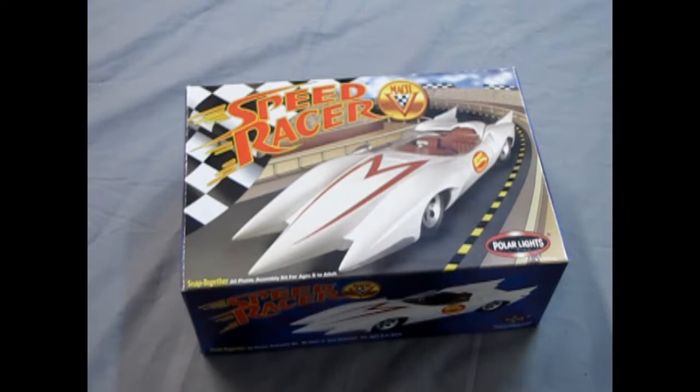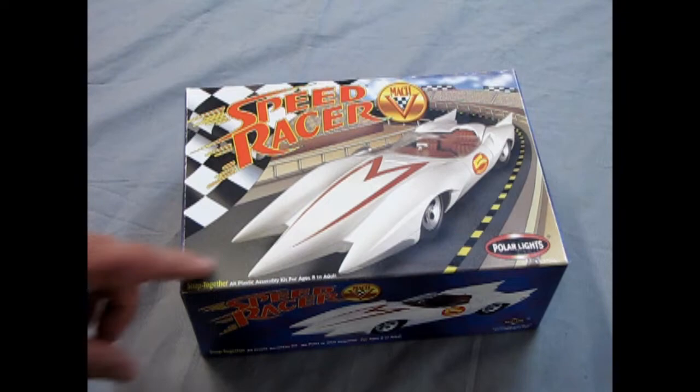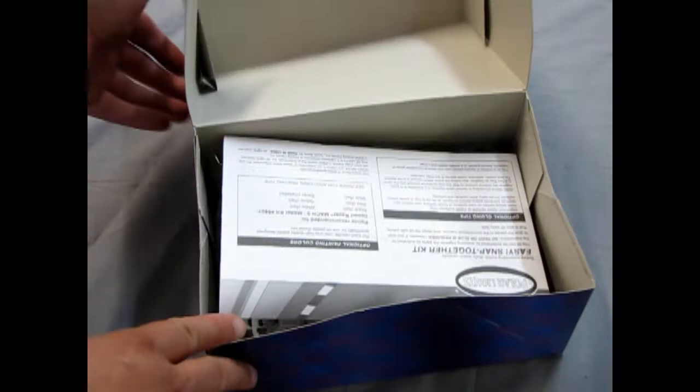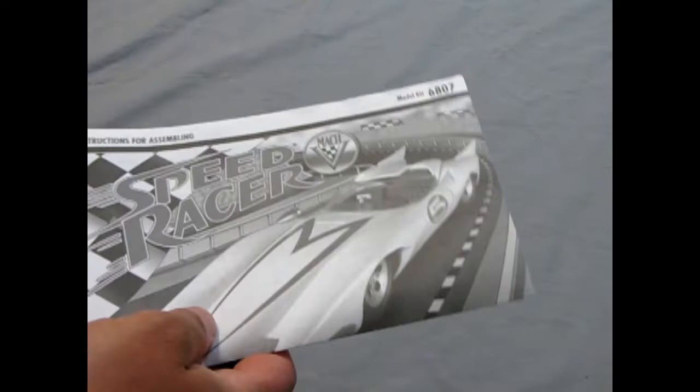And now we take a wonderful look back into the Speed Racer Mach 5 by Polar Lights. This is a snap together kit and it's got that flip box like Revell had back in the day. Let's move this out of the way and check out our Speed Racer easy snap together kit.